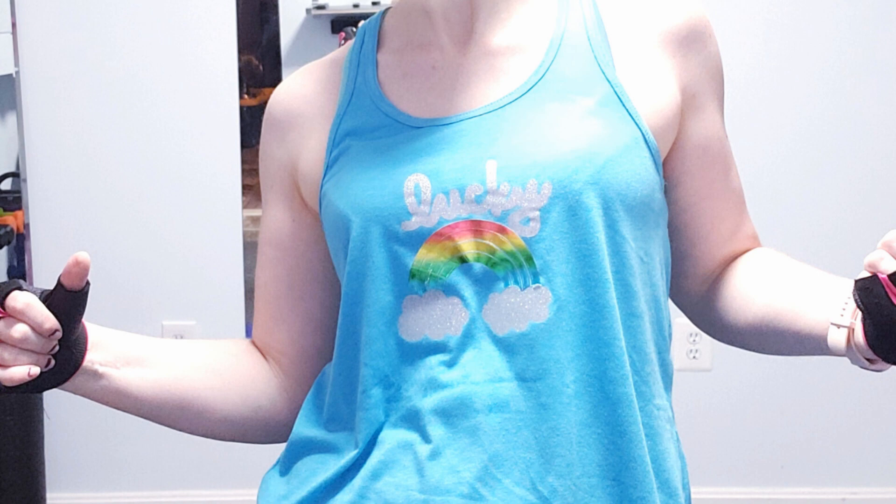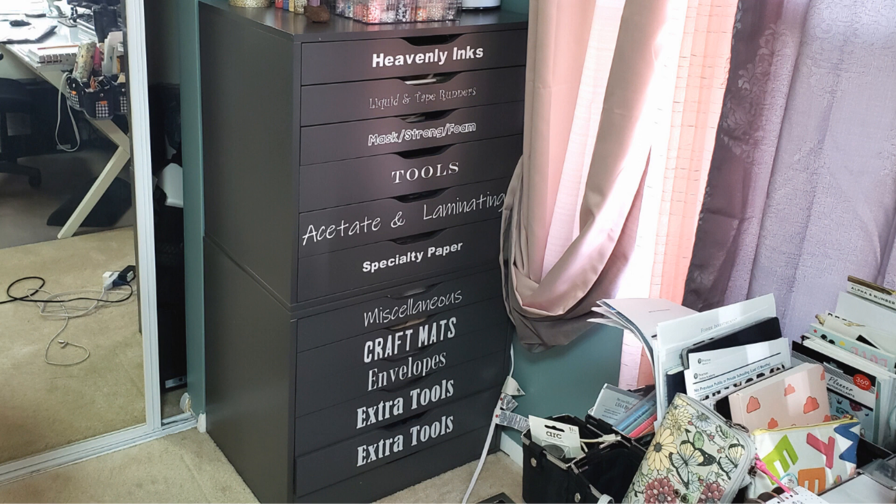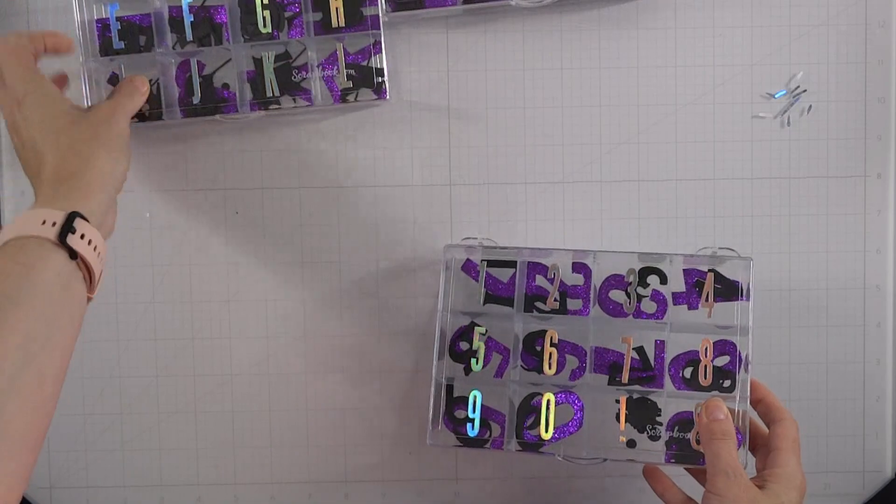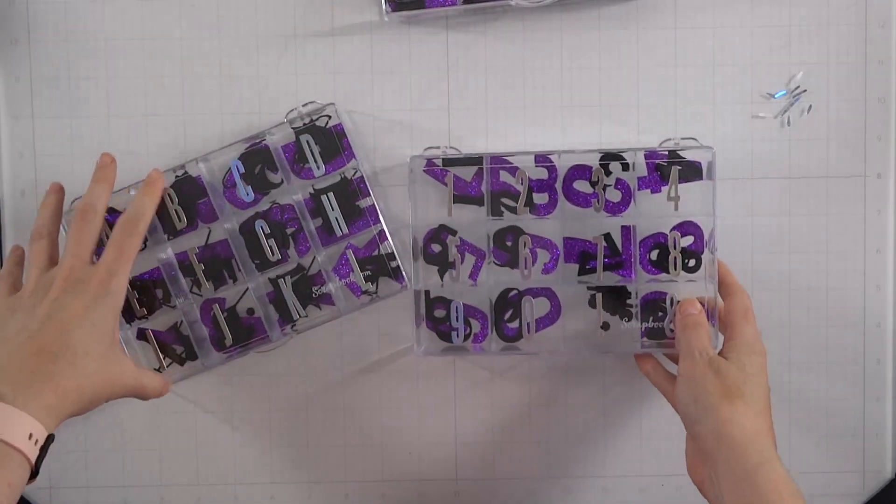All right, let's talk about some other quick things that vinyl can be used for. Right here I have my storage labeled and that is for where I keep all my additional tools and supplies, and I think it just looks really pretty with that white vinyl on it.